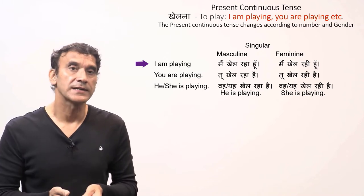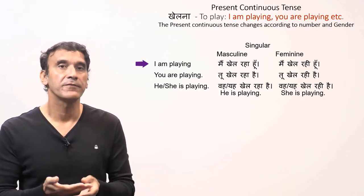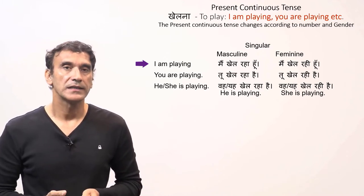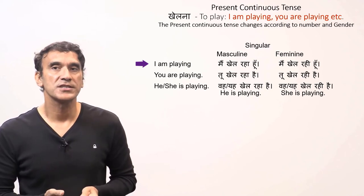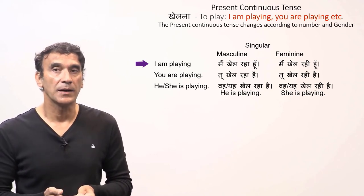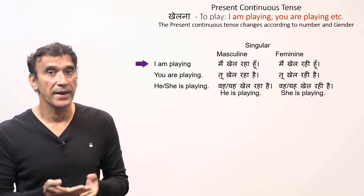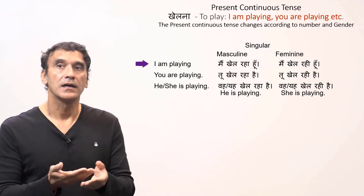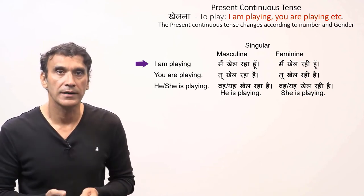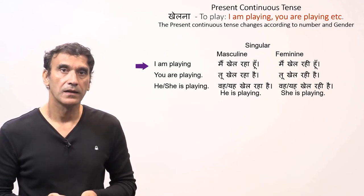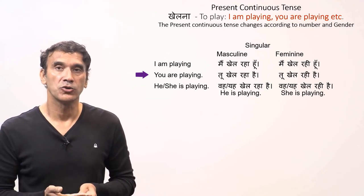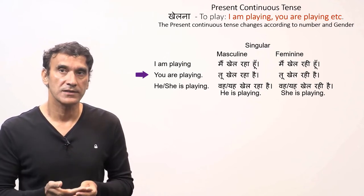A girl would say 'main khel rahi hun' — I am playing. So you can see that the continuous participle takes the feminine form in case of a feminine subject. The participle changes according to the gender of the subject. A boy says 'main khel raha hun' and a girl says 'main khel rahi hun'.